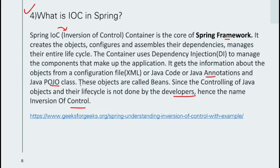It gets information about objects from configuration files — XML, Java code, or Java annotations — and also from Java POJO classes. These objects are called beans. Previously in normal Java applications, developers were responsible for creating objects, maintaining their lifecycle, and managing dependencies. For example, if a Department object depends on Student objects, we had to manage that dependency ourselves.